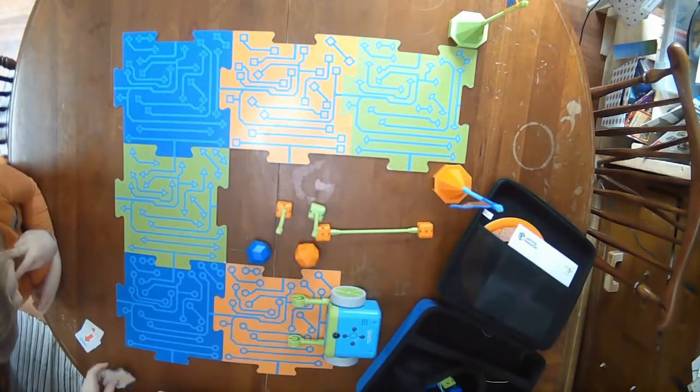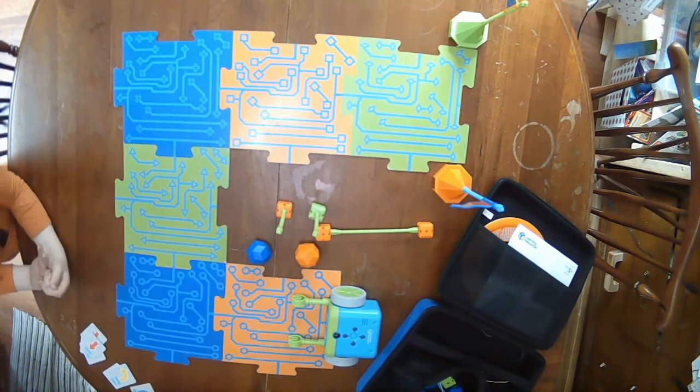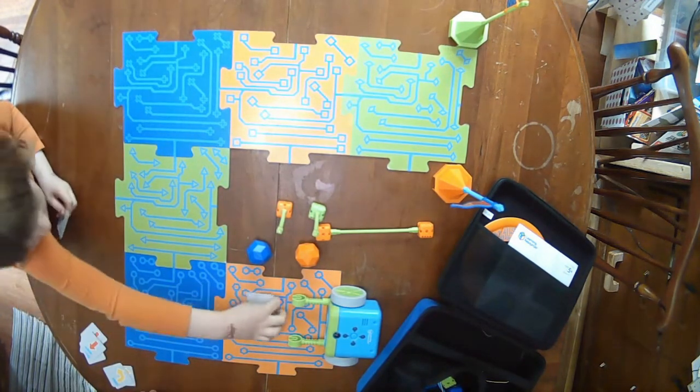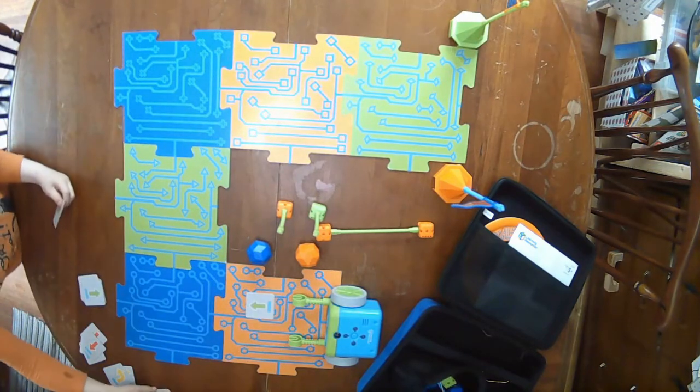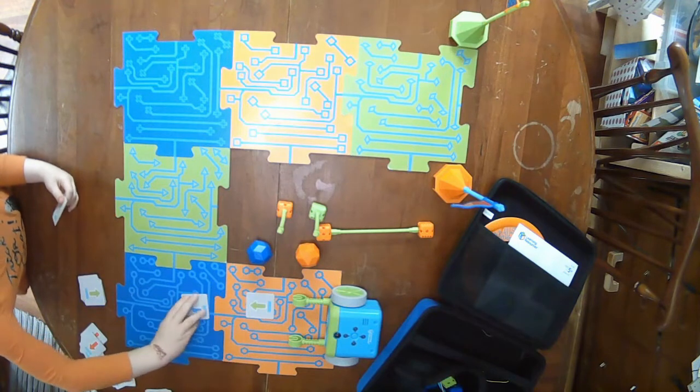Let's watch as she tries to figure out the best code to get Botly to the other end of the track. She lays out the code cards where she thinks they should go. These make a great bridge from Robot Turtles, another great coding game.